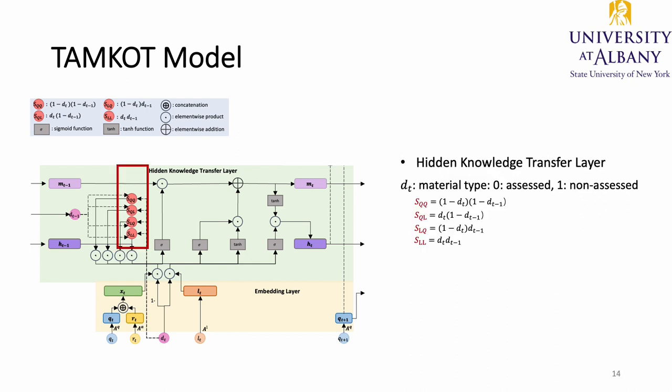To do that, we first propose four indicators calculated using DT and DT-1, as shown in these four equations. DT equals 0 or 1 representing the learning material types at each time step. These four indicators represent the transition permutations — for example, SLQL means transition from question to lecture — and each of them equals 0 or 1. When it equals 1, it represents the corresponding transition order is activated.